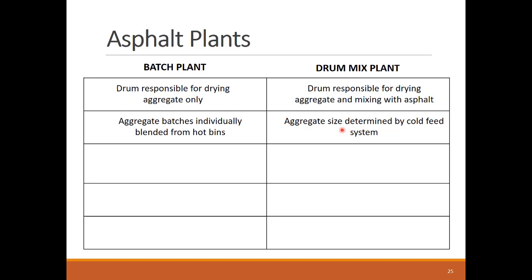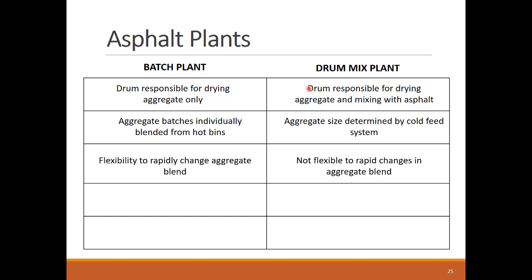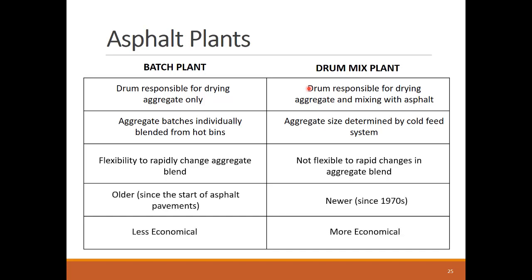Let's summarize our asphalt production plant discussion with a comparison table. As discussed, the drum and cold feed system in the drum mix plant replace the weighing and mixing functionalities of the tower in the batch plant. Batch plants are more flexible to change the mix design, as the mix customization is pushed all the way down to the mixing tower. With drum mix plants, we need to wait for the drum to finish its mixing before starting a new mix from the cold feed system. On the other hand, drum mix plants have newer and more efficient heating and mechanical systems, which make them more economical.